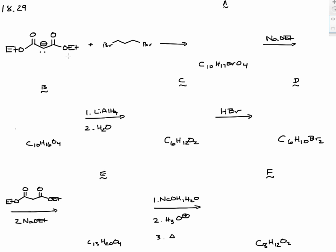We're starting with the anion of diethylmalonate. The carbon bearing the negative charge is going to be a nucleophile. That nucleophile is going to attack an electrophile through an SN2 mechanism — in this case, the carbon bearing the bromine. So it's going to displace that and form a carbon-carbon bond. We're putting in a three-carbon chain with a bromine, and the molecular formula verifies our proposed structure.